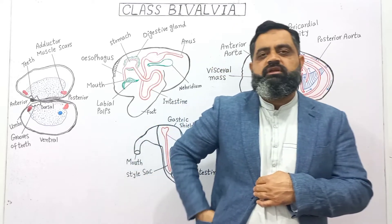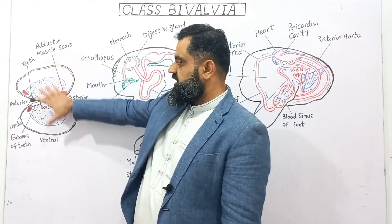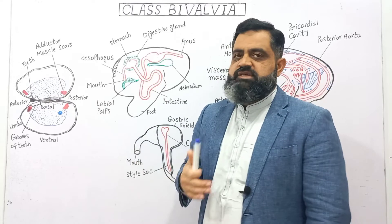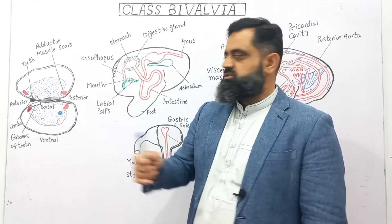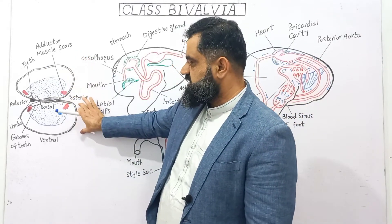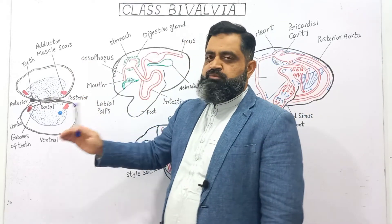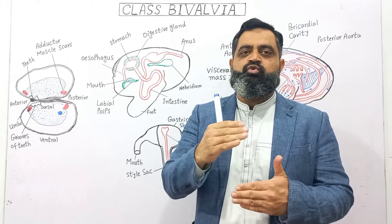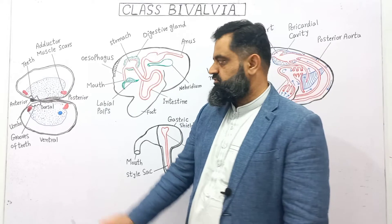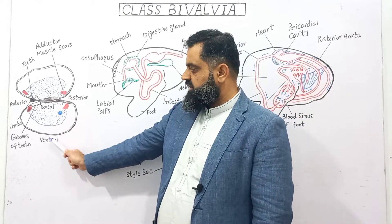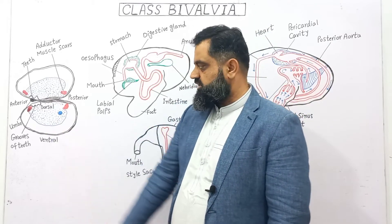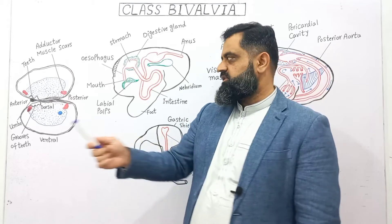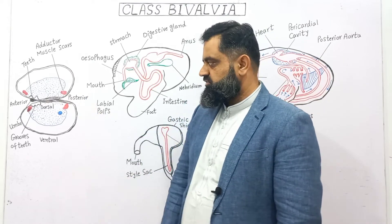Looking at the diagram of a class Bivalvia animal, which is known as a mussel, the shell consists of two portions: the first valve and the second valve. This whole structure is one shell divided into two halves for easier understanding. The dorsal and ventral portions of the shell are visible, with the anterior side where the mouth is present and the posterior side where the anus is present.